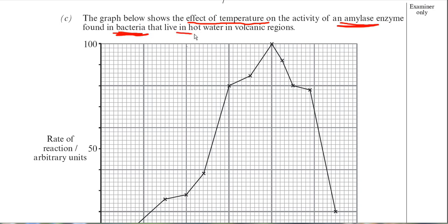Those bacteria live in hot water in volcanic regions, so you should be thinking this is perhaps to do with a thermostable enzyme — an enzyme that can tolerate very high temperatures. There are bacteria that live in these hot volcanic vents, and they do have enzymes that are tolerant of very high temperatures.